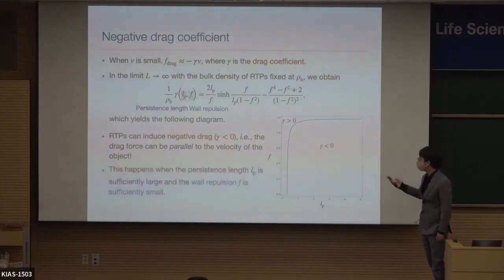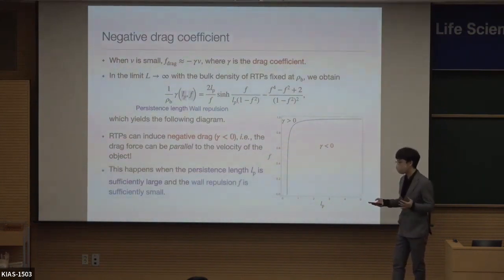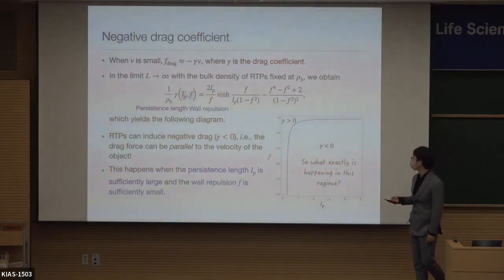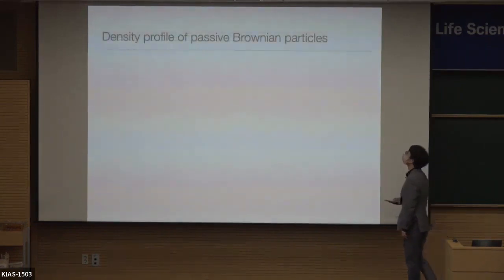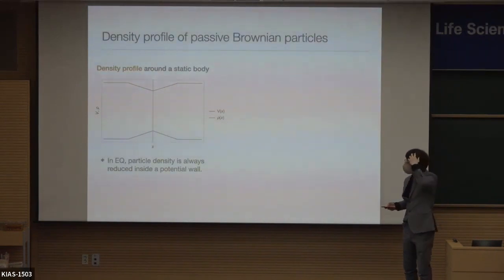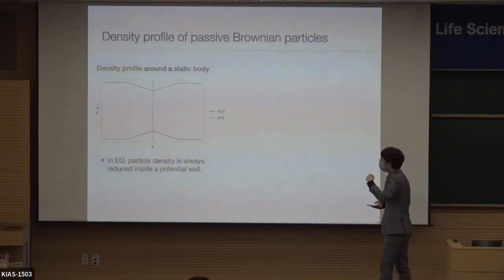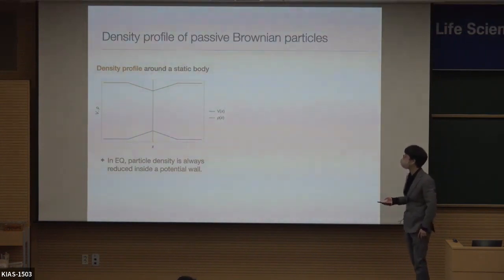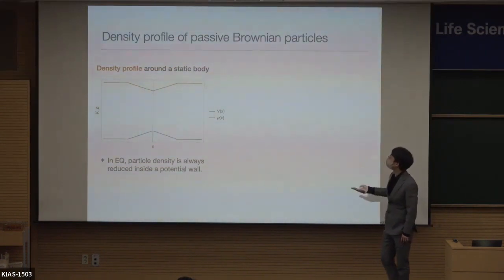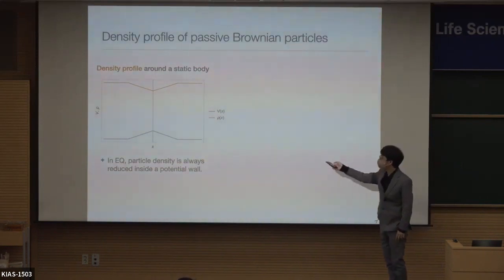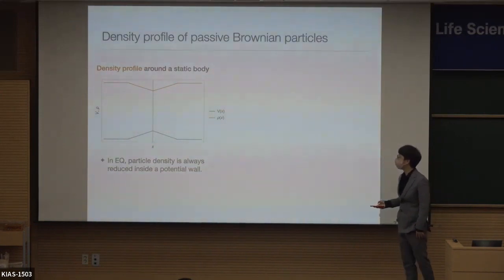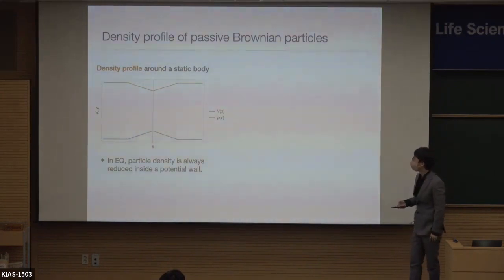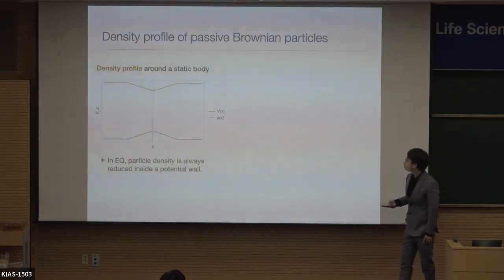You get a phase diagram in the persistence length versus interaction strength plane. In the red region in the lower right corner, you get negative drag — meaning the drag force is in the direction of motion. This happens when the persistence length is substantially larger compared to the object size, and when the overall repulsion is substantially small.